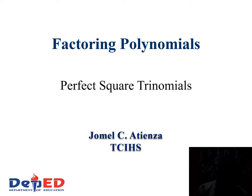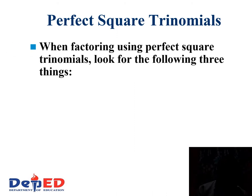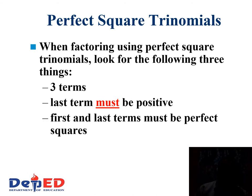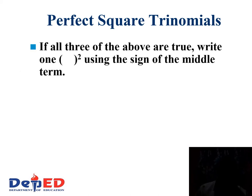Factoring polynomials as perfect square trinomials. When factoring using perfect square trinomials, look for the following three things: Is there three terms? The last term must be positive. The first and last terms must be perfect squares. If all three of the above are true, write open and close parentheses with the square using the sign of the middle term.